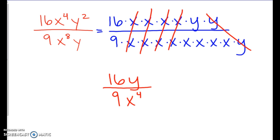So we are not done yet. We have to simplify 16 and 9. Can we simplify 16 divided by 9? Is there a number that can be divided into 16 and 9? No, there is not. So this actually ends up being our final answer here. 16 times y divided by 9 times x to the fourth.